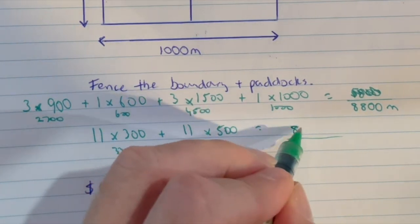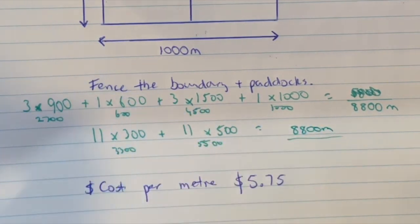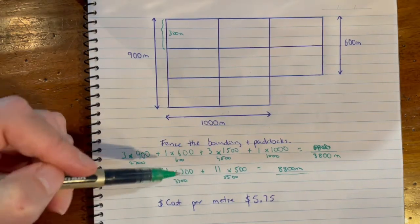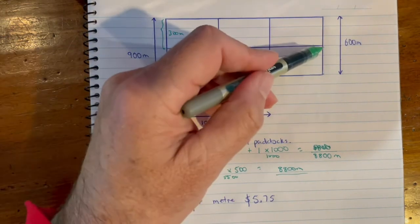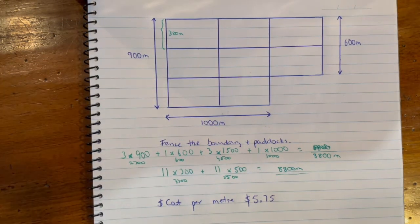8,800 meters as the total distance for this particular shape. Now when you go back to your original question, which has this section missing, you'll get a slightly different answer.